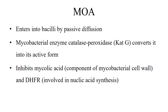Isoniazid enters into bacilli by passive diffusion. Catalase peroxidase is an enzyme in the mycobacteria which converts isoniazid into its active form. This active form binds with certain other molecules to form intermediates. These intermediates inhibit mycolic acid as well as dihydrofolate reductase. Mycolic acid is an important component of mycobacterial cell wall, and dihydrofolate reductase is an essential enzyme needed for nucleic acid synthesis in mycobacteria. So both these processes are inhibited.